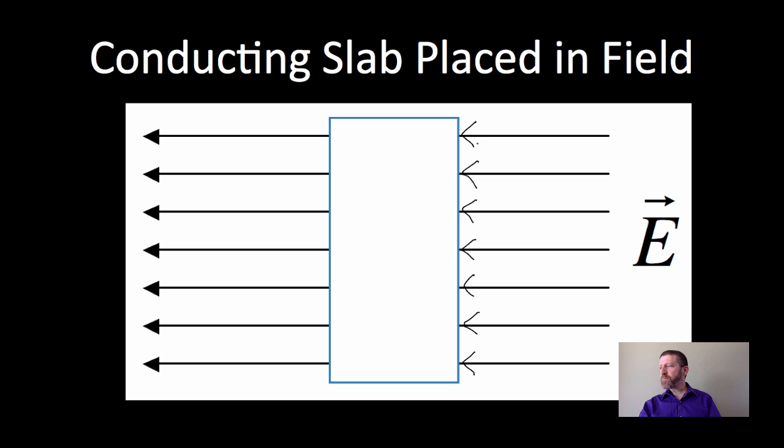So if the field's pointing this way, positive charges will move in the direction of the field. Many charges will move over here—thousands or millions of charges—and that will leave these negative charges over there. Now, if you wish, you can talk about electrons moving. The electrons would move to the right, leaving the nuclei abandoned to the left. Or you could just talk about moving positive charges.